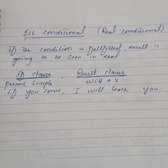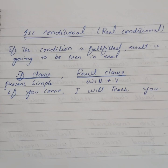Then we have first conditional, also called conditional type 1 or real conditional. Here we talk about a real situation — if the condition is fulfilled, the result is going to happen in reality in the future. For example: 'If you come, I will teach you.' The if clause is in present simple, and the main clause uses the modal auxiliary 'will', which talks about prediction or possibility. For instance: 'If I teach you, you will learn this.' This is how you make zero conditional and first conditional.